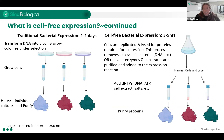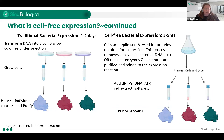The other advantage is that cell-free is faster than traditional bacterial expression. For traditional bacterial expression, you purify your DNA, transform it into E. coli, grow the colonies under selection, grow the cells up, and then harvest the cultures creating a cell pellet, leading to a recombinant protein. This takes about one to two days, which is pretty fast compared to other techniques.